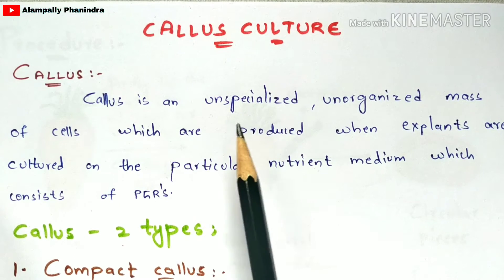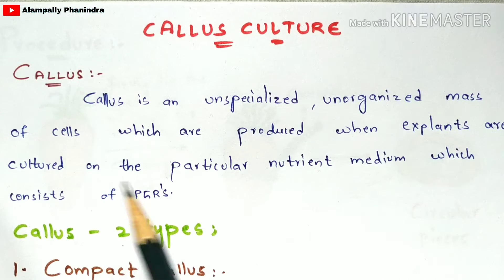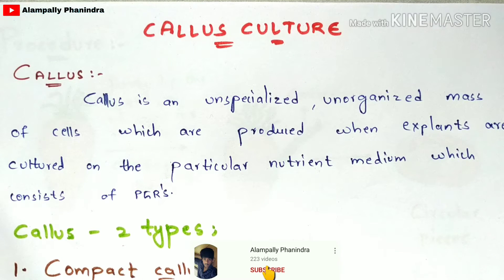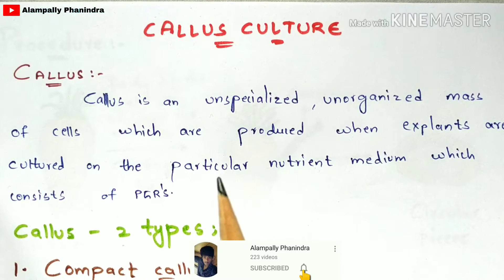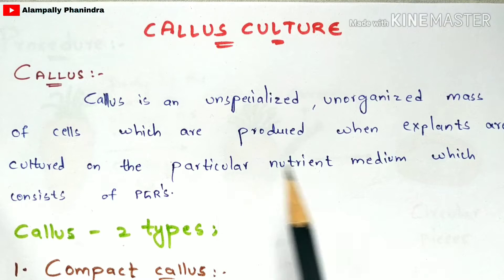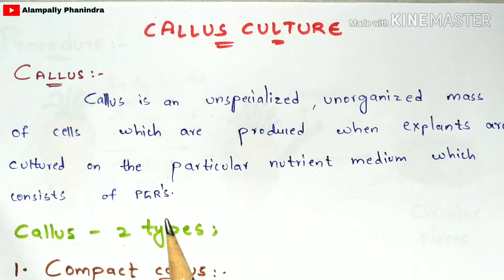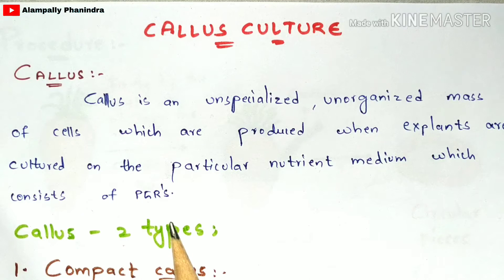What is meant by callus? Callus is an unspecialized, unorganized mass of cells which are produced when explants are cultured on a particular nutrient medium. This nutrient medium consists of plant growth regulators — also called plant growth hormones — like auxins, cytokinins, and gibberellins, along with nutrients like nitrogen, phosphorus, and boron.